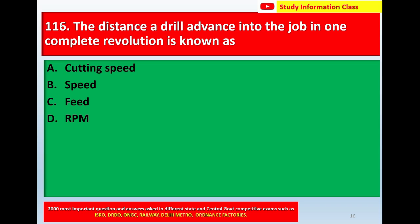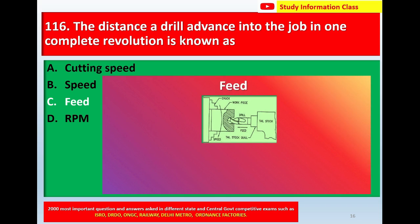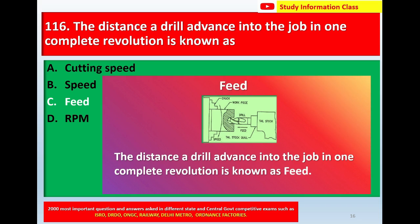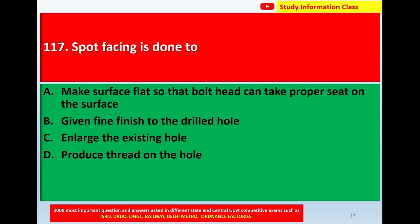Question number 116: the distance a drill advances into the job in one complete revolution is known as — Option A: cutting speed; Option B: speed; Option C: feed; Option D: RPM. The correct answer is Option C, feed. This is the diagram showing that the distance a drill advances into the job in one complete revolution is known as feed.